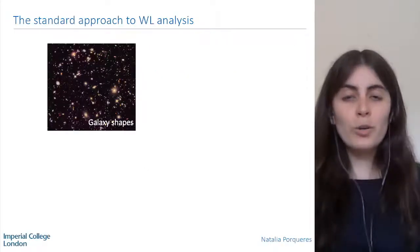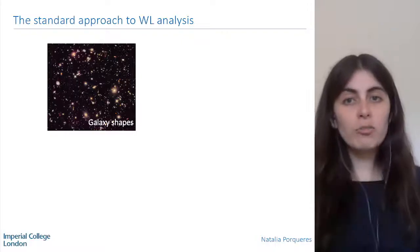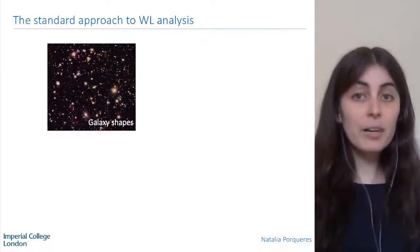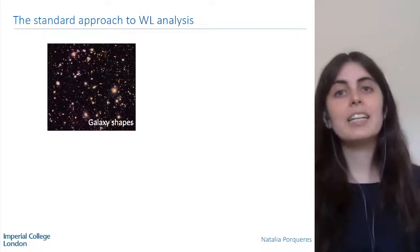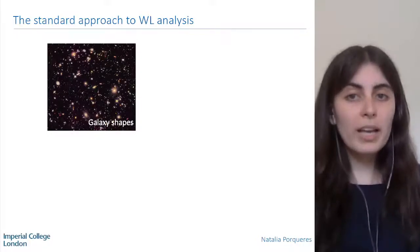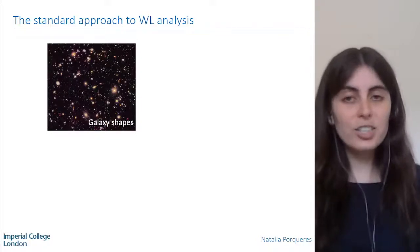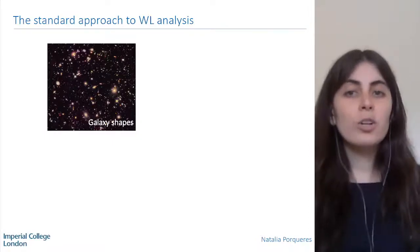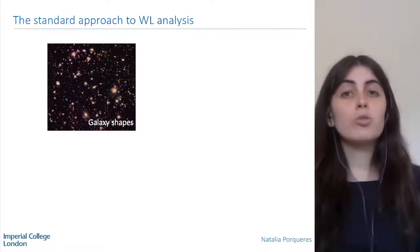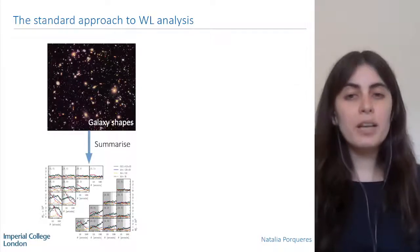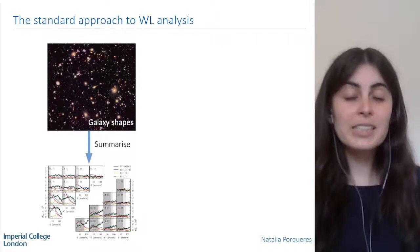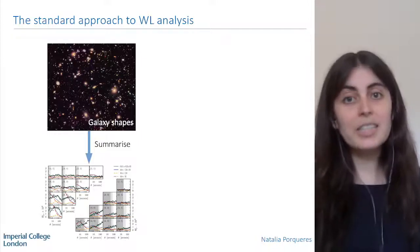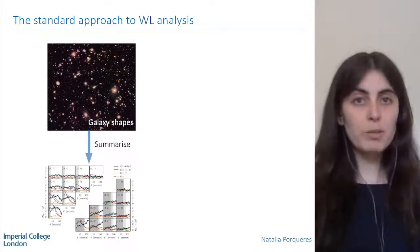The weak lensing data consists of millions of images of galaxies, and we don't see these galaxies as they really are. We see them slightly distorted because they are weakly gravitationally lensed by the large-scale structures. The standard approach to analyze all these galaxy images is to compress them, summarize them into a set of summary statistics — very often only the two-point summary statistics like the correlation function and the power spectrum.